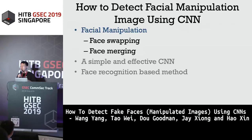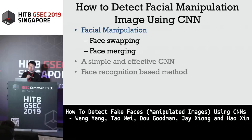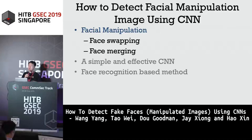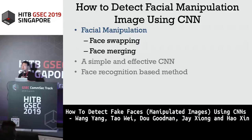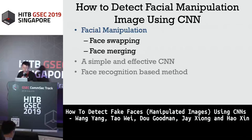Some subfields include copy-and-paste detection and image resizing detection. As a text-oriented topic, we split this into two major sub-topics: one is face swapping, which contains technologies like deepfake and FaceSwap; and then we talk about more traditional technology — face merging, which means averaging two subjects' faces together.